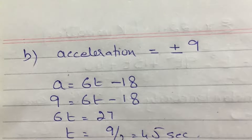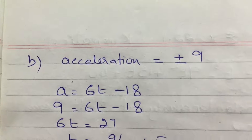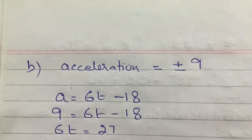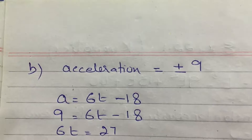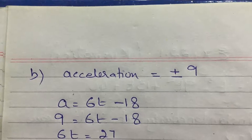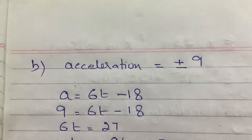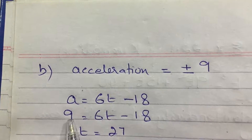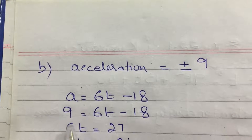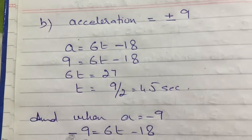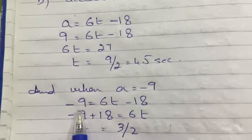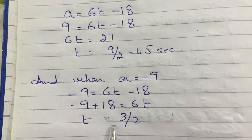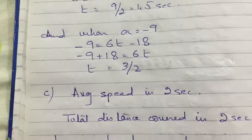In part B, the question asks for the value of t when the acceleration has a magnitude of 9. Magnitude 9 means it may be plus 9 or minus 9. I differentiate the velocity equation once more to get the acceleration equation. I substitute a equals plus 9 to get one time, and then a equals minus 9 to get the other time, giving the two values of t when acceleration has magnitude 9.